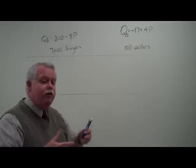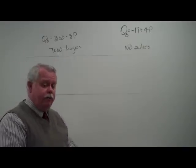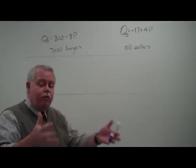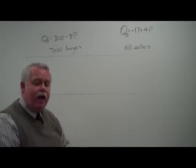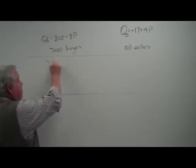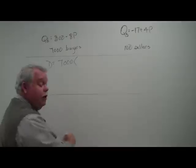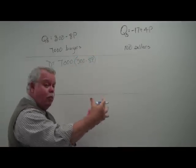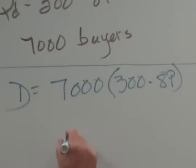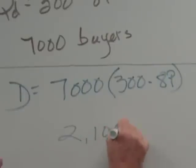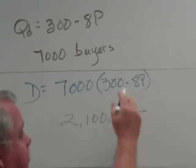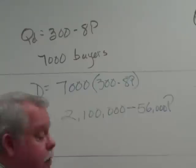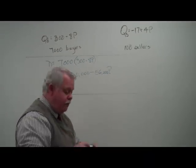Also in this market, we estimate there to be 7,000 potential buyers. And so from that, we're going to add up each of the individual demand curves and derive the market demand curve, capital D. The market demand is 7,000 times the individual demand, 300 minus 8P. So the total market demand is 2,100,000 minus 56,000P. Capital D represents the total market demand.